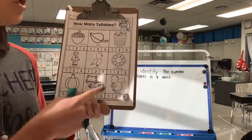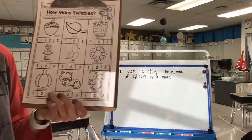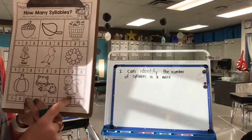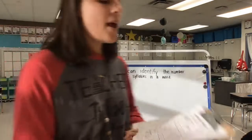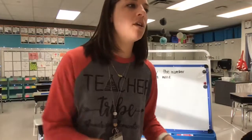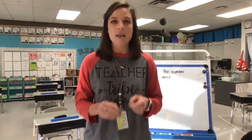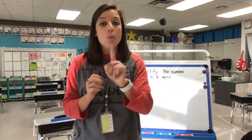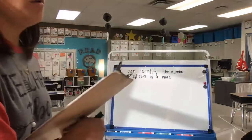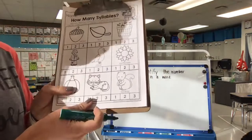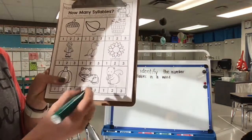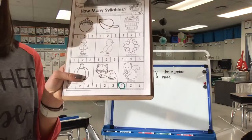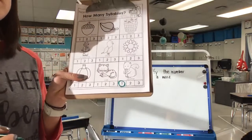All right, let's try squirrel because this one's tricky. Let's try this one together. We're going to clap it out to see how many syllables we hear in the word squirrel. Ready? Squirrel. How many syllables are there? One syllable. So in our word squirrel, it's a long word, but it's only made up of one part. So I want you to circle the number one to show that you know there's one syllable in that word.